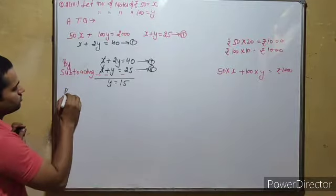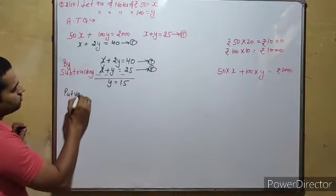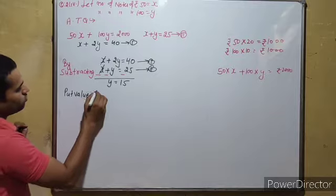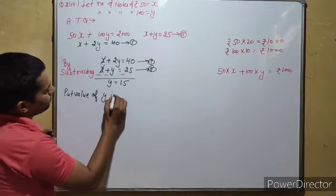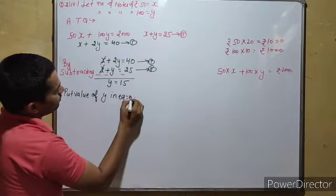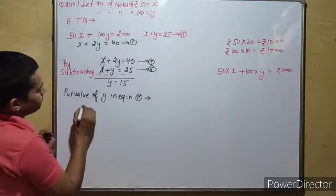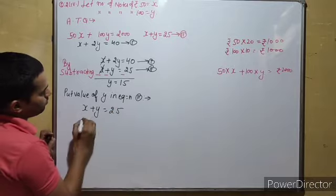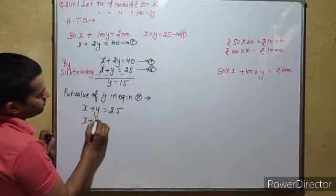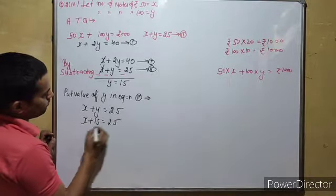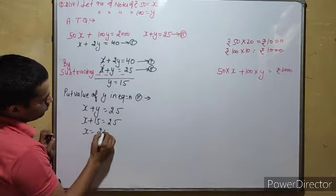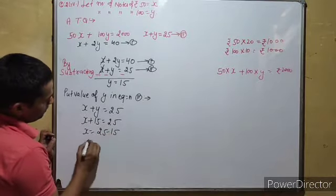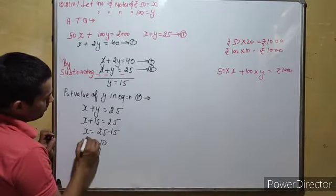So y is equal to 15. Now, x plus y is equal to 25. Therefore, x plus 15 is equal to 25. x is equal to 25 minus 15. x is equal to 10.